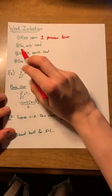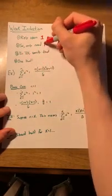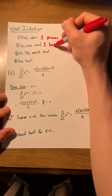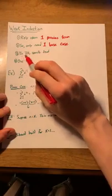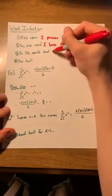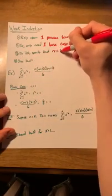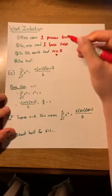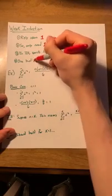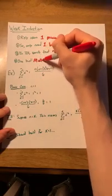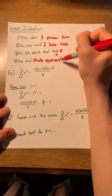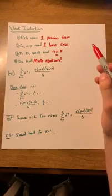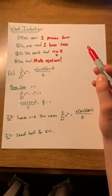Because of this, we only need one base case. And in our inductive hypothesis, we'll specify that n equals k. One hint I have for you: math equations. Typically, when you see a mathematical equation, it's a good sign that you should think about using weak induction.